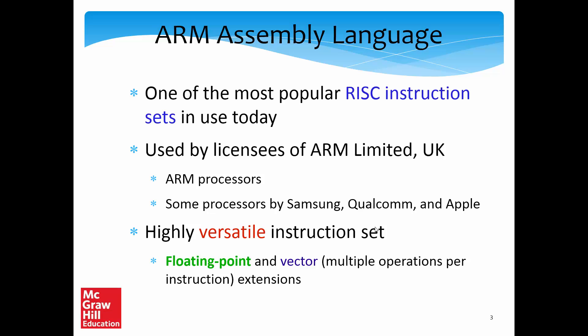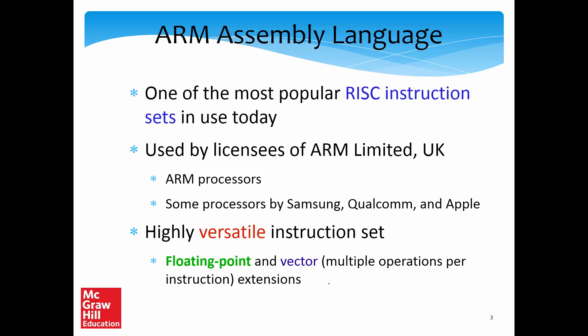Along with a lot of integer instructions, ARM supports floating point instructions and has what are called vector extensions, which allow multiple additions in the same cycle — we will discuss those in Chapter 11. ARM also has a popular extension called the Thumb instruction set, which is a slightly simpler set of instructions. We will not discuss the Thumb ISA in this chapter; we will discuss only the generic ARM instruction set for integers.